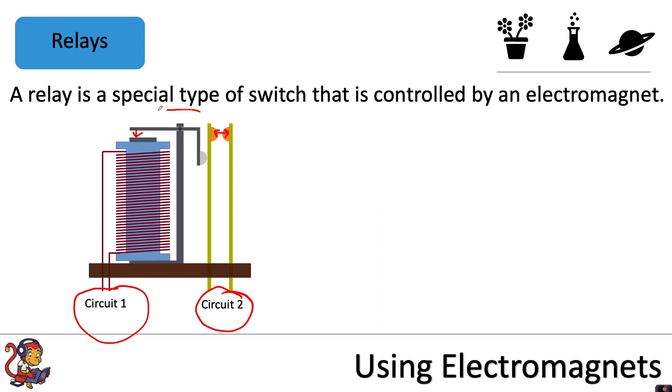So this switch here, this relay switch, is powered by this electromagnet. When this is turned on it will then turn on circuit two, as this switch will now be closed and the current will be able to flow through the circuit.